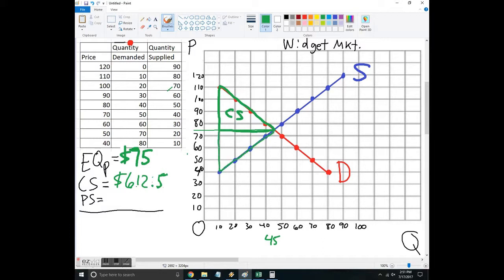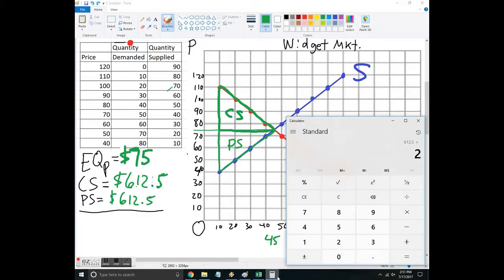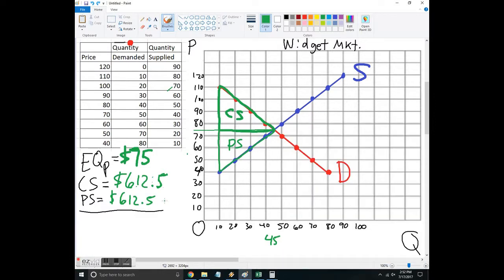Producer surplus is the area above the supply curve but below the price. I'm already looking at it, it's going to be the same. So the producer surplus is 612.5. Then I want to add those together and the combined surplus is 1225.